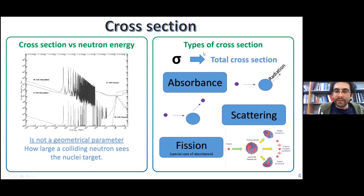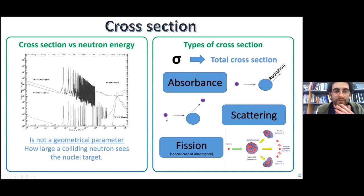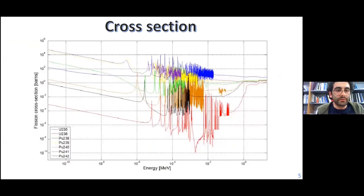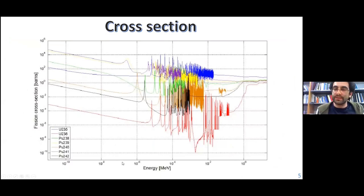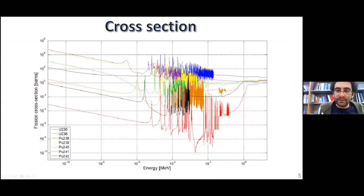We have different kinds of cross section: the absorption cross section, the scattering cross section, and also the fission cross section, which is a special piece of the absorption. This is an example of the cross section. This area here represents the thermal energy of the neutrons, this area over here represents the energy of the fast neutrons, and this part here is the resonance zone.